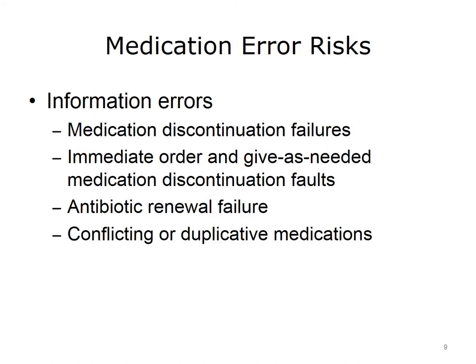The 22 situations were categorized into two groups. First, information errors generated by fragmentation of data and failure to integrate the hospital's several computer and information systems. Second, human-machine interface flaws reflecting machine rules that do not correspond to work organization or usual behaviors. Examples of information errors include medication discontinuation failures, immediate order failure, give-as-needed medication discontinuation faults, antibiotic renewal failure, and conflicting or duplicative medications.